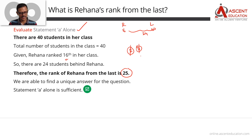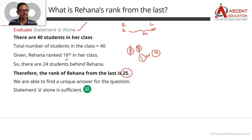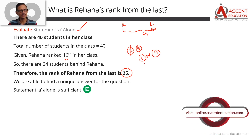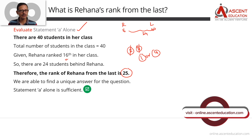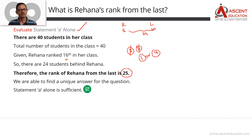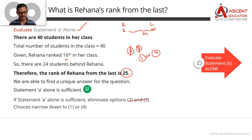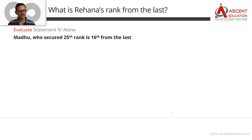Can it be option 1 or option 4? We need to evaluate Statement B to find out. Since Statement A is sufficient, we can eliminate answer options 2 and 3. Then we check whether Statement B is also sufficient or not, which will tell us if the answer is option 1 or option 4.